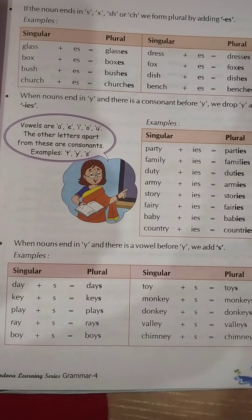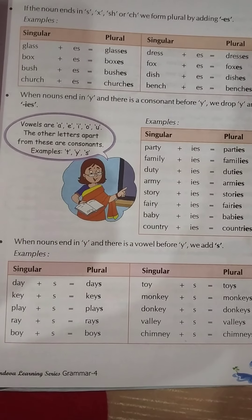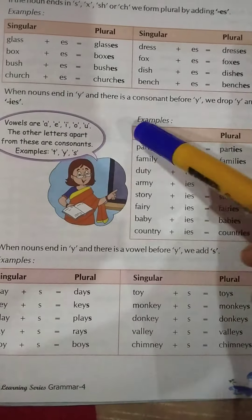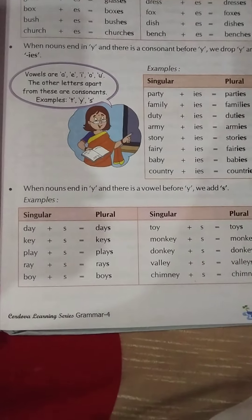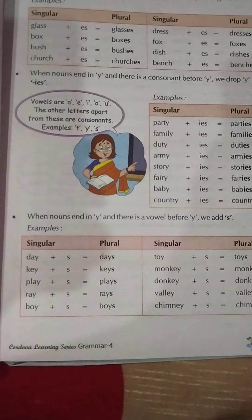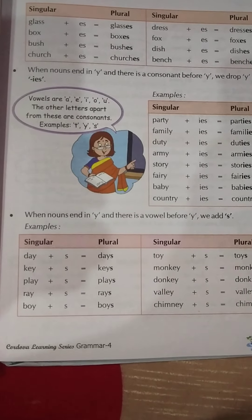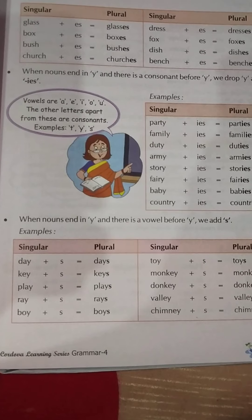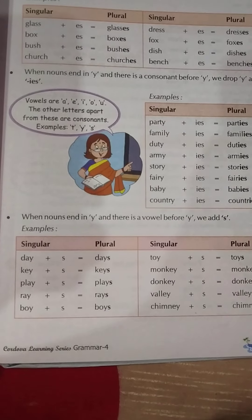The letters apart from vowels are consonants. All the other alphabets apart from A, E, I, O, U are all consonants. If there is any consonant before Y, in plural form we drop Y and add IES.